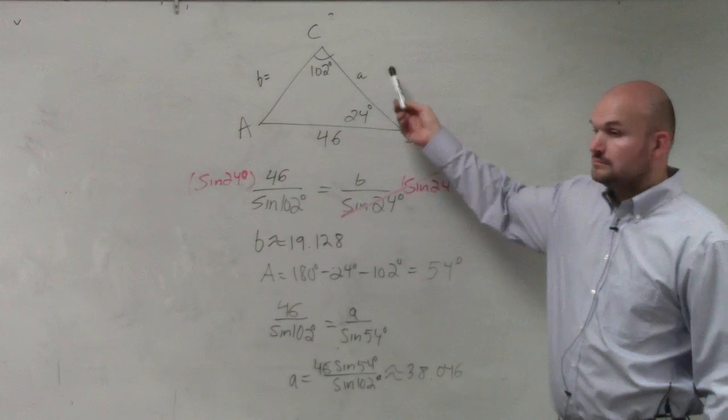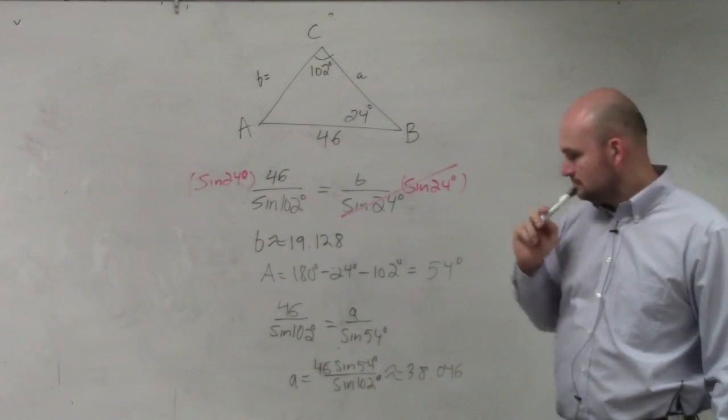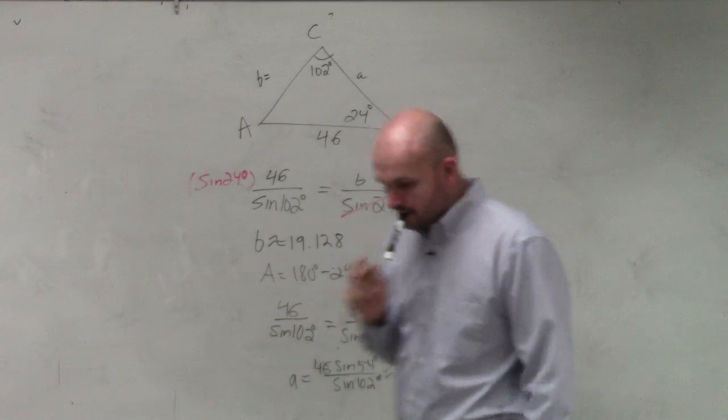So for the little a, the big letters are the angles and the little letters are the sides opposite to them. Yes. Thank you.